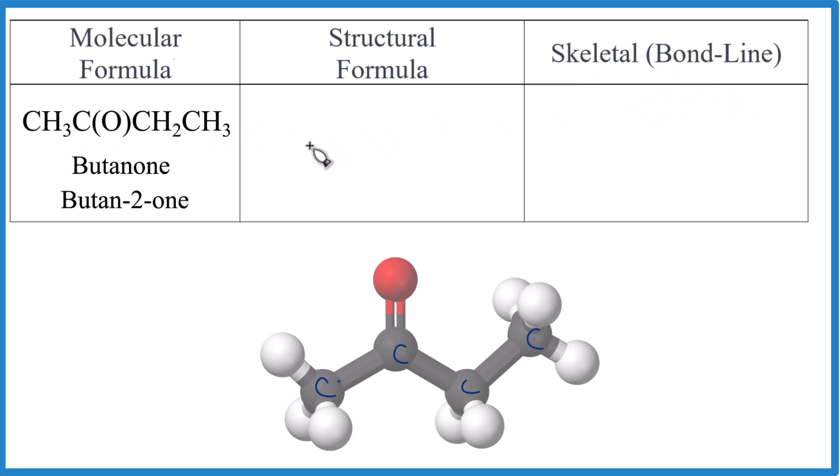So I'm going to put four carbons in a row. So remember, carbon is going to have four bonds. So this carbon has one, two, three, four. This carbon has one, two, three, four. This carbon, one, two, three, four.